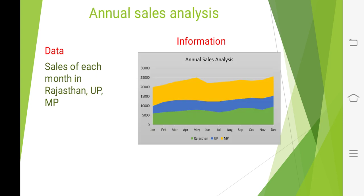If a company wants to analyze the sales of its product in three states, the annual sales analysis chart is information for the company, and this information can only be obtained with the help of sales data of each month in those three states. According to this chart, the company can take decisions about whether to sell a product in a particular state, and what measures to take to increase sales. So information is more important than the data.